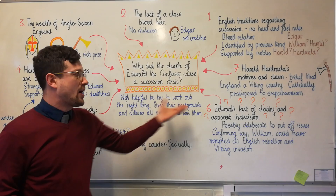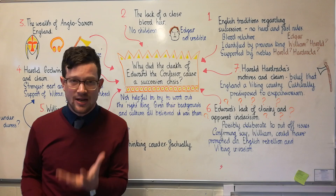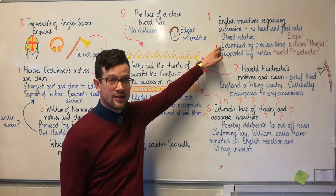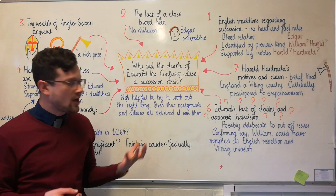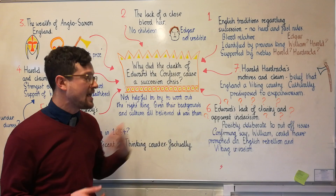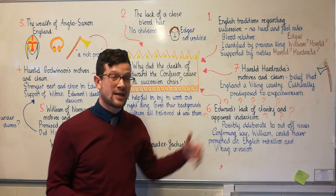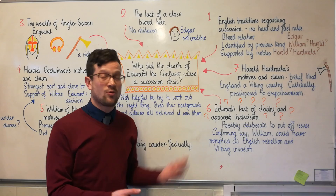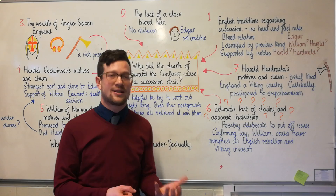We might wonder why Edward created such a confused situation. Why didn't he clear up who he wanted to become king? It's possible this was deliberate. Confirming a successor came with problems as well as solutions. If he had promised William the throne more clearly, this could have prompted a rebellion from the earls led by Harold, and this rebellion would have created uncertainty in England which would almost certainly have been viewed by the Vikings as an opportunity to invade and raid.